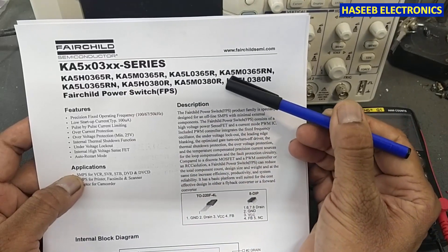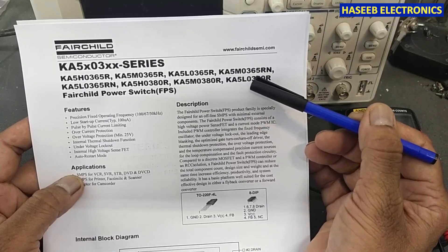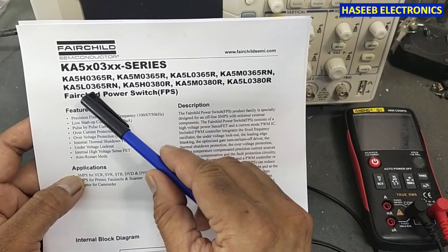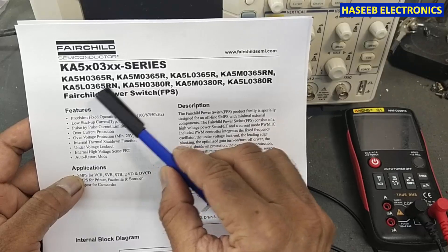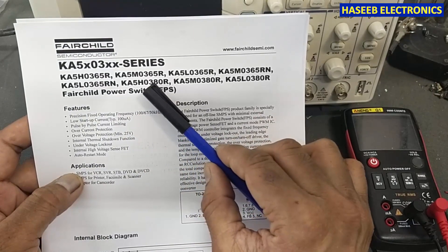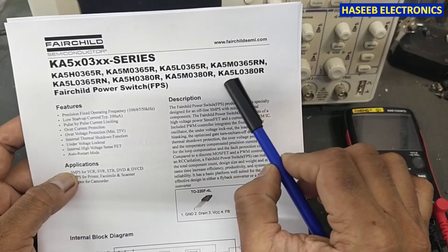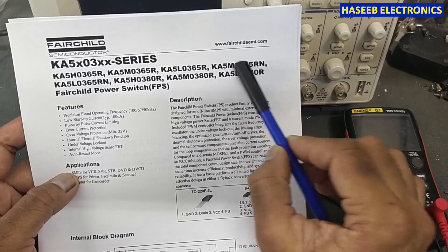Then we have other numbers: KA5M0365RN, 365L, 365RN, H0380R, M0380R, L0380R. It is a family.